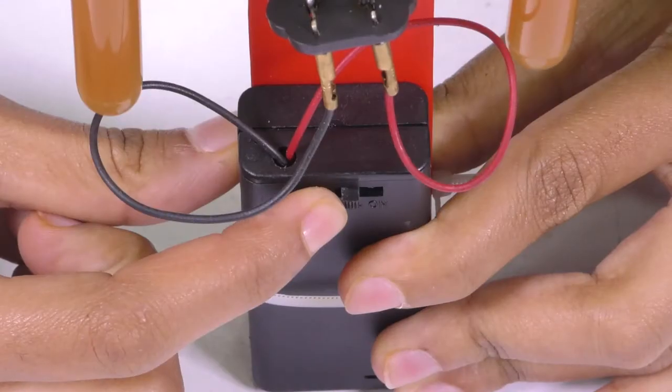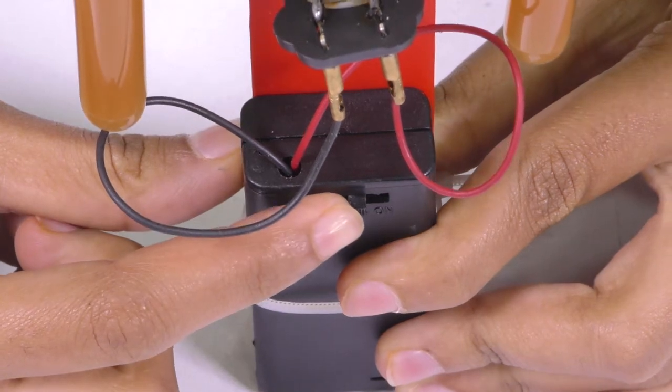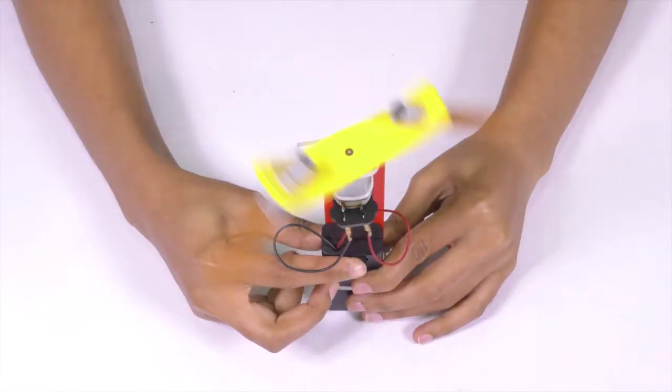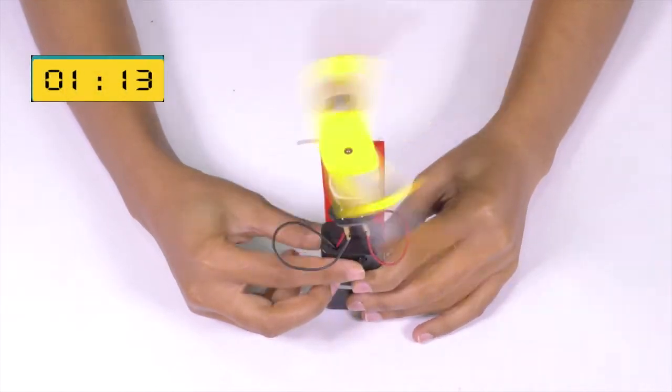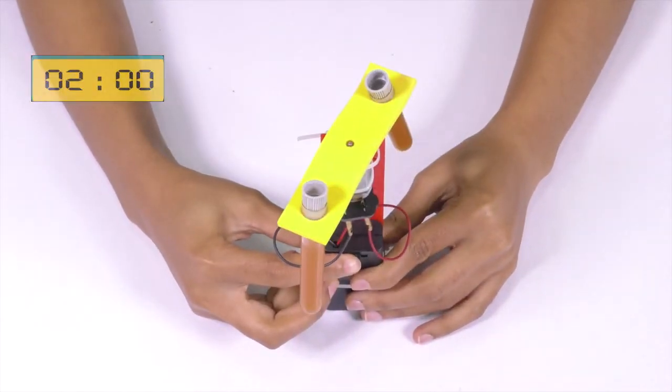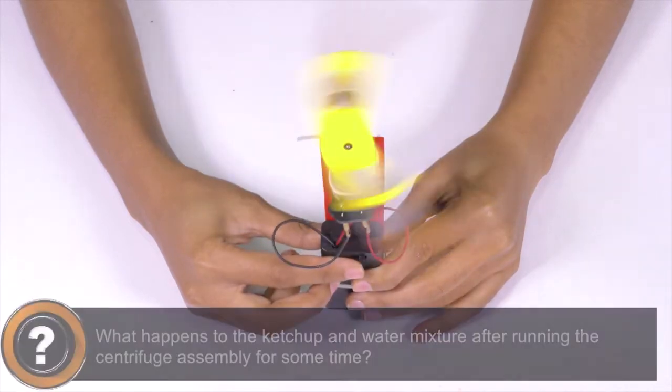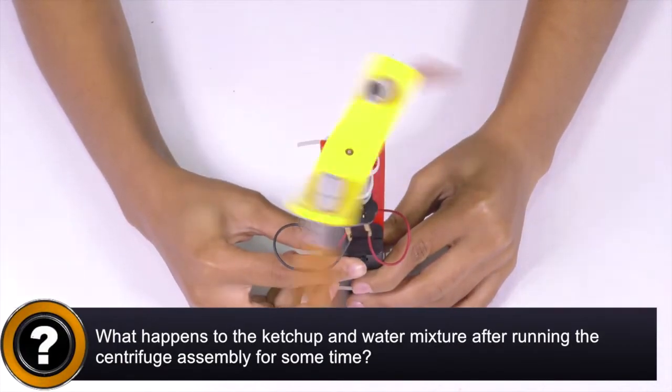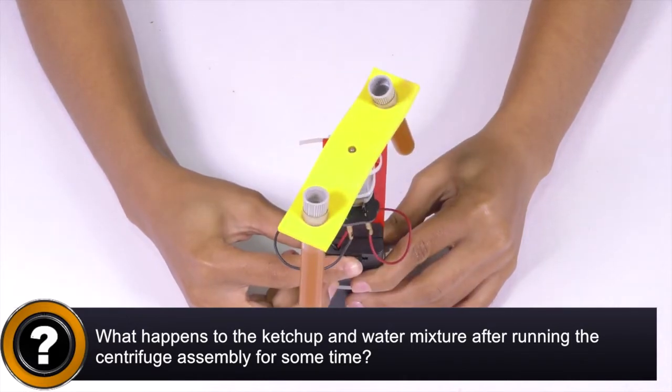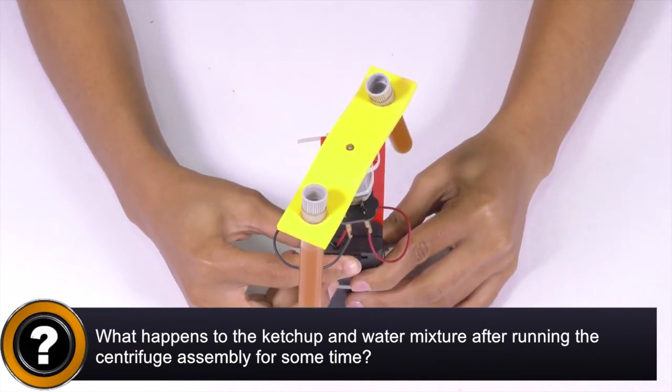Now, turn the centrifuge assembly on by switching on the battery holder switch and let the centrifuge run for about 2 minutes before turning it off. What happens to the ketchup and water mixture after running the centrifuge assembly for some time? Explain your observations with reasons.